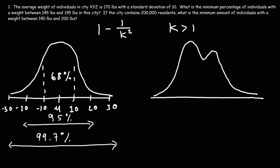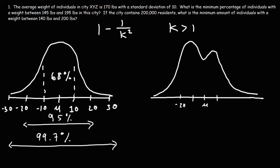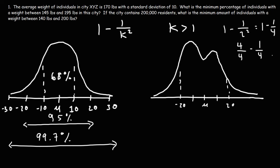For the distribution on the right, let's use Chebyshev's theorem. You can't use it where k equals 1, so we start with two standard deviations. Plugging in 2 for k: 1 minus 1 over 2 squared equals 1 minus 1 over 4, which is 3 over 4, or 0.75. So at least 75% of the data lies within two standard deviations of the mean.